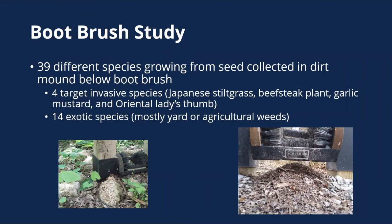We did a study a few years ago where we took the pile of dirt that accumulates underneath boot brushes and grew it out to see what was in there. We found 39 different species growing from seed collected in that dirt mound, including four targeted invasive species: stilt grass, garlic mustard, oriental lady's thumb, and beefsteak plant — plus 14 other exotic species like clovers and agricultural weeds. That was really convincing evidence that boot brushes do knock seeds off people's boots and have value beyond just educational.